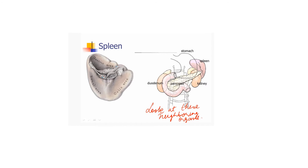The spleen is related to the stomach, pancreas, and kidney. The body can survive without the spleen if it is ruptured or injured. It has a large blood circulation — about 40% of the blood passes through the spleen. In fetal life it acts as a hemopoietic organ like bone marrow, but this function is not present in infants or adults.